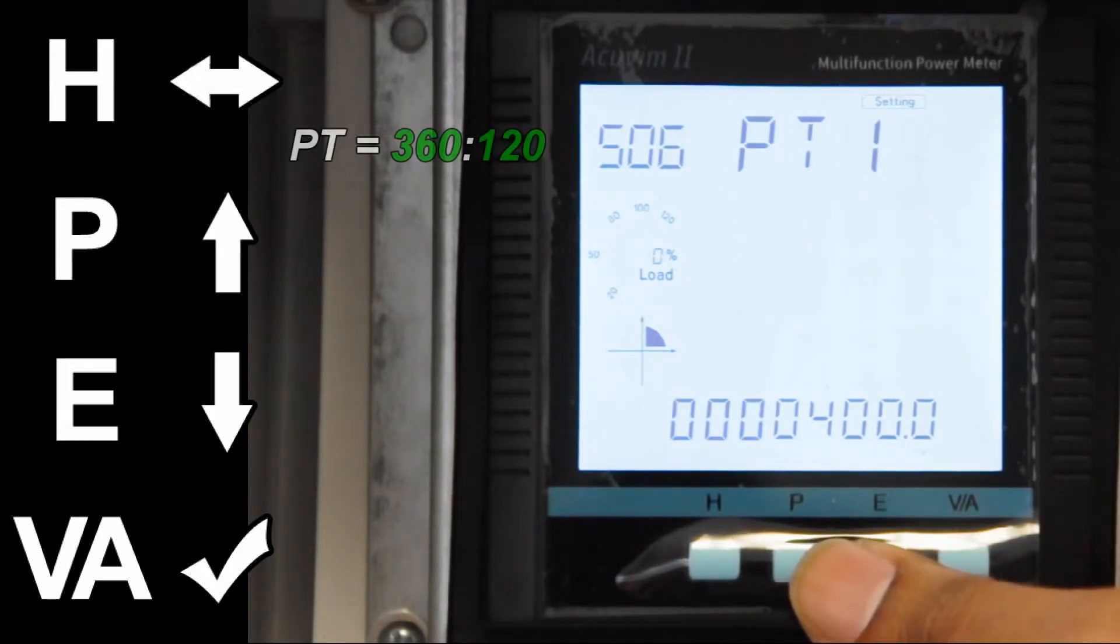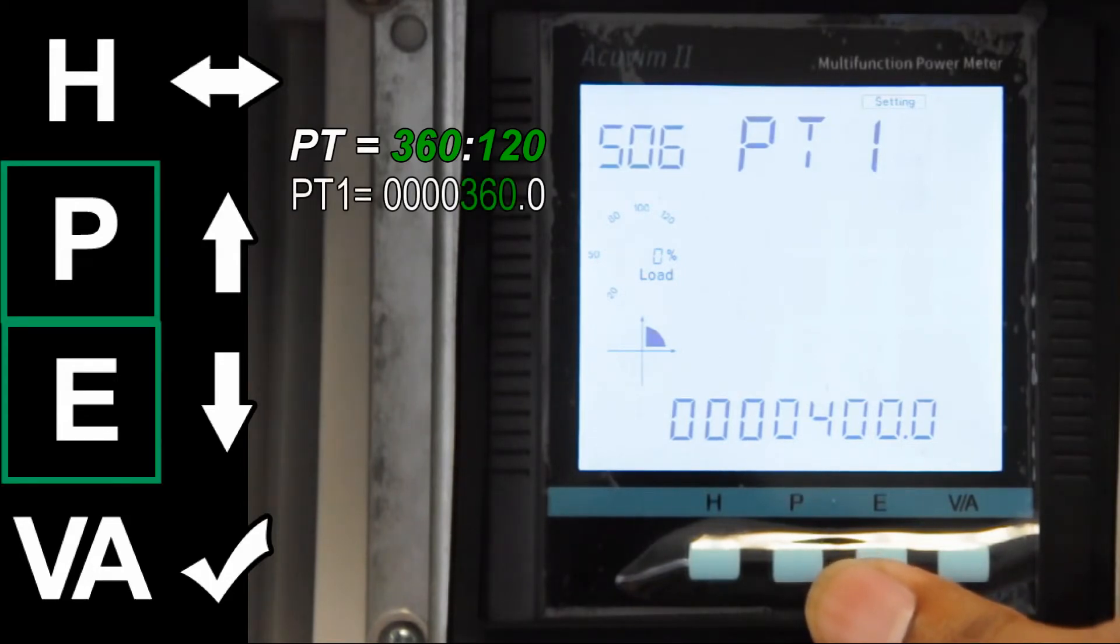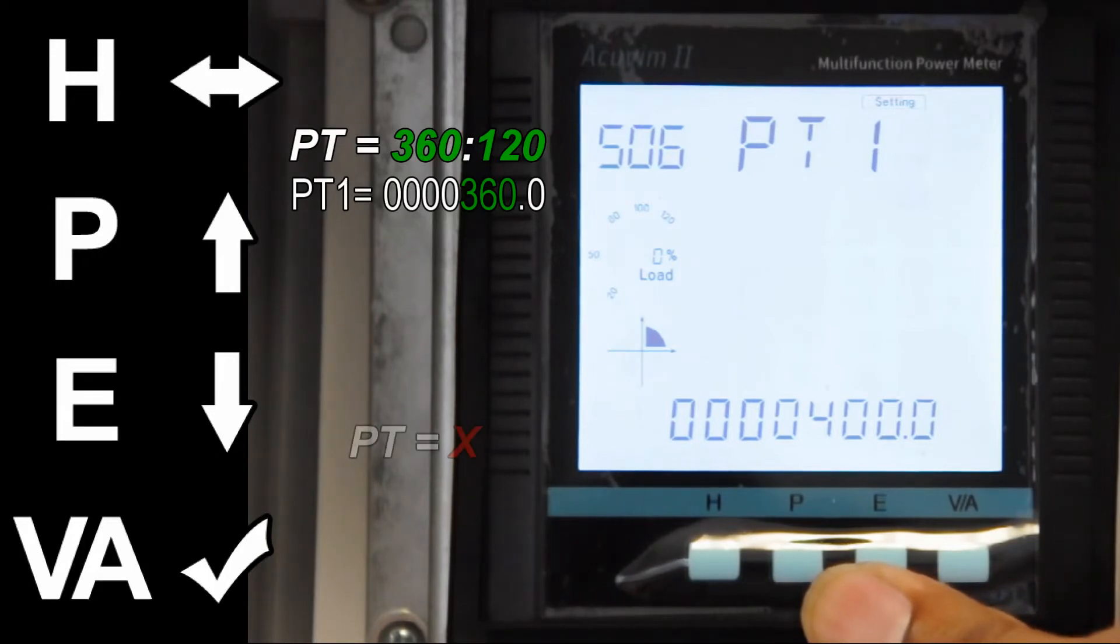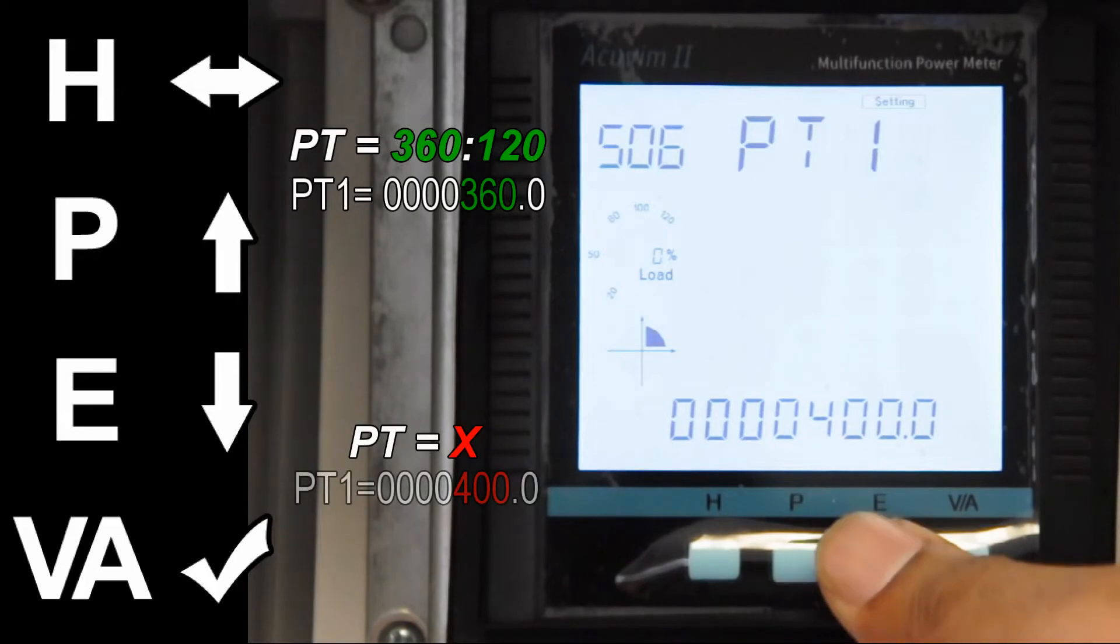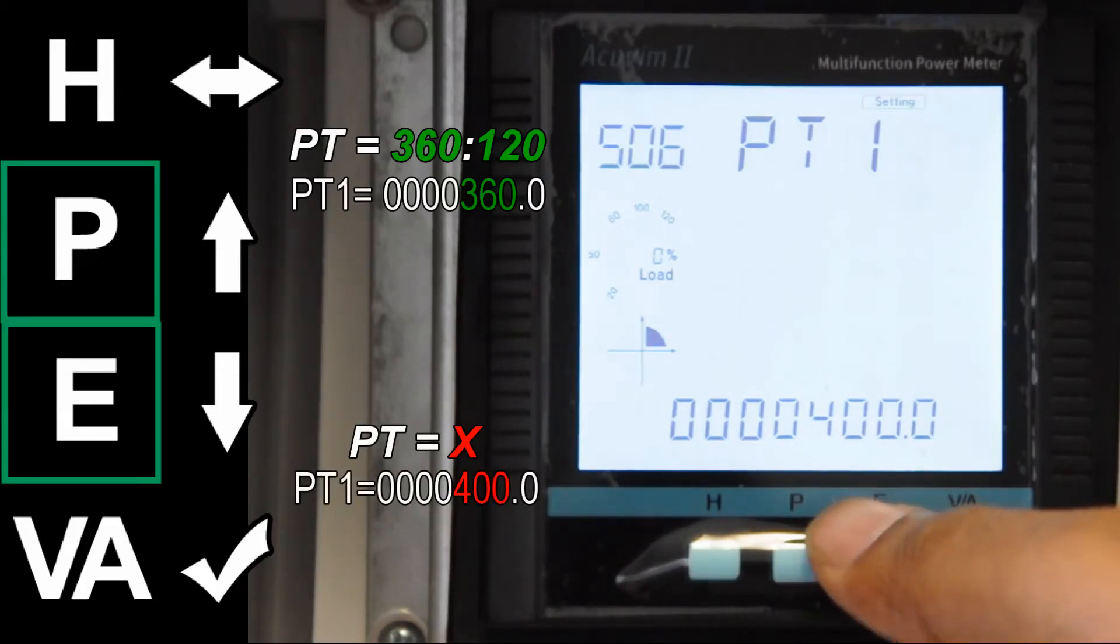If your PT ratio is 360 to 120, then set PT 1 to 0000360.0. If there is no physical PT present in the system, set PT 1 to 0000400.0.